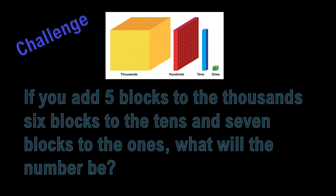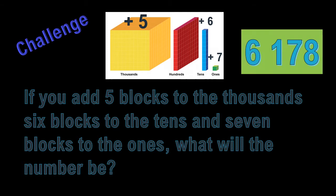If you add five blocks to the thousands, six blocks to the tens, and seven blocks to the ones, what will the number be? You are correct. The number will be 6178.